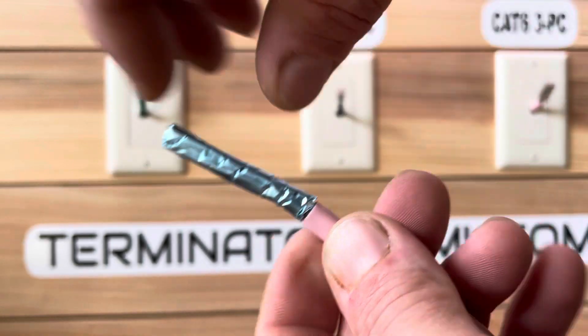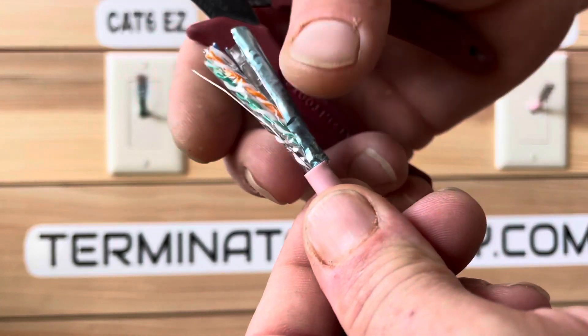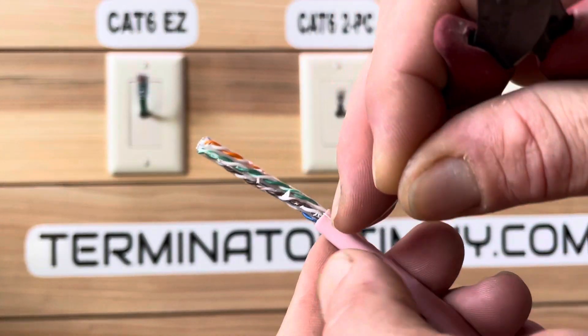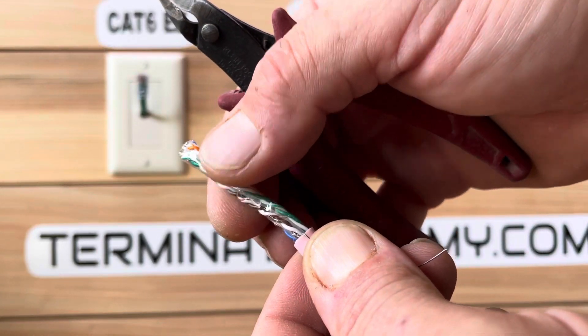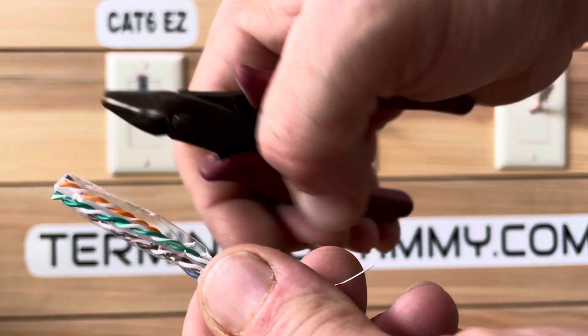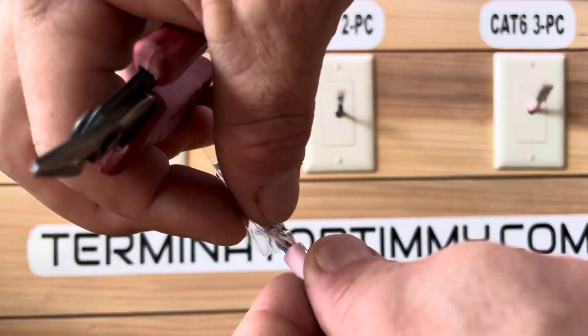Make a tiny cut in the foil to remove it cleanly. Fold the ground back and you will use it later. Remove the protective plastic just like the foil.